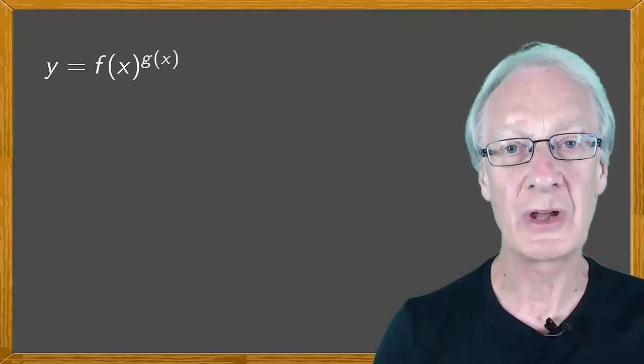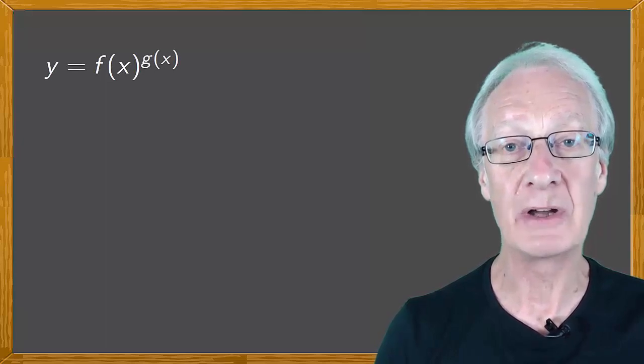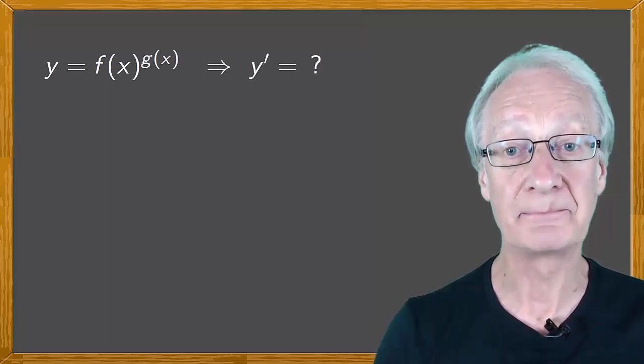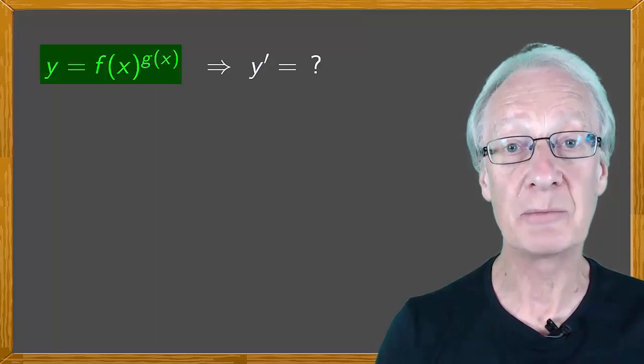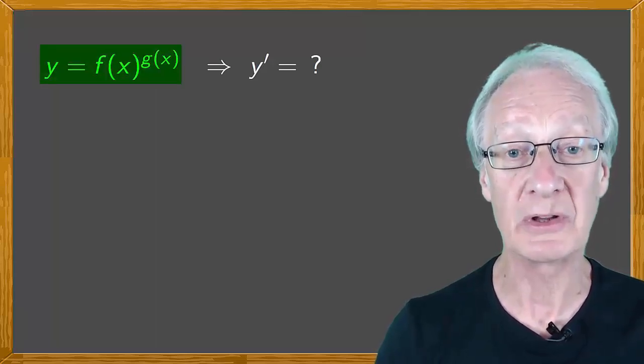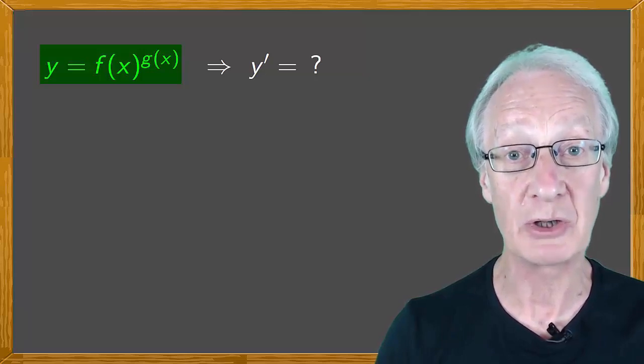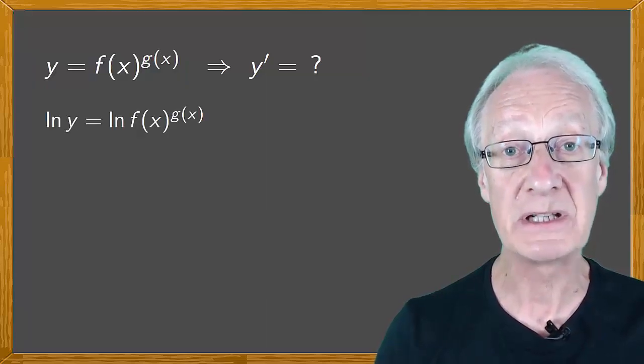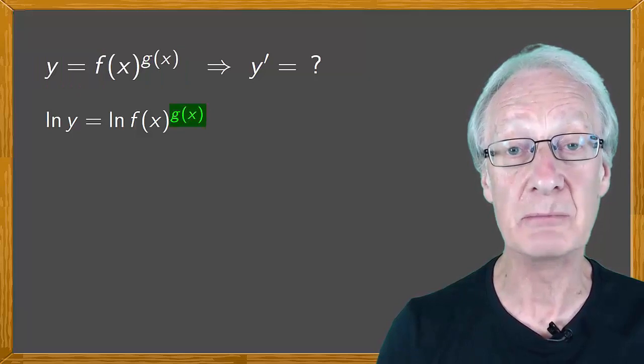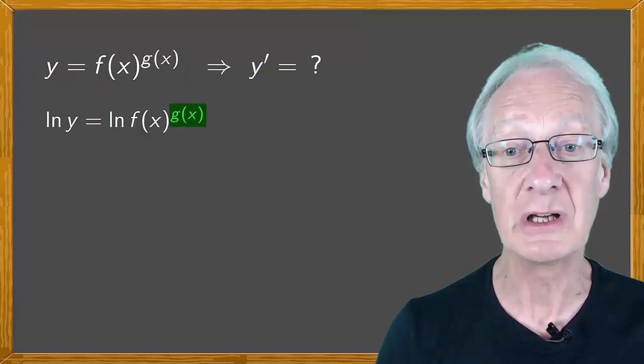Suppose that y equals f of x to the power of g of x, and we want the derivative of y. To find this, we'll apply natural, or neperian, logarithms to the two sides of the equality. By a property of logs, the exponent can be moved outside the log by multiplying.